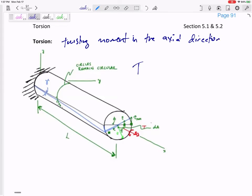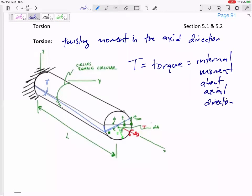We'll call it T. T is a torque, and it's an internal moment about the axial direction. Torque is a twisting moment.